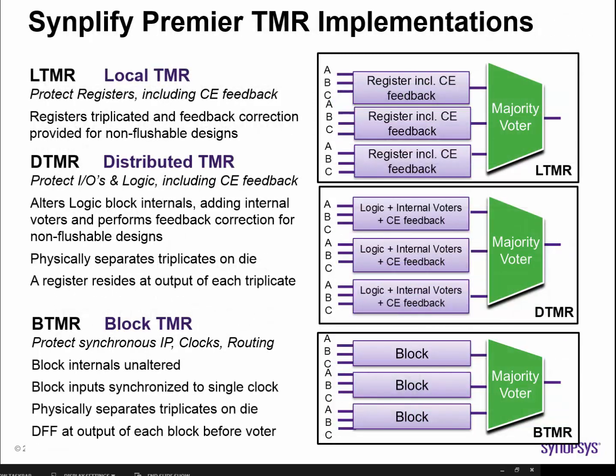Simplify offers a variety of different TMR implementations to protect different primitives and macros in the FPGA design. First, it offers a so-called local TMR to protect any register. The register is protected by triplicating it and then feeding the outputs from the triplicates into a majority voter to determine the final error-corrected output. Secondly, there is distributed TMR or DTMR, which is used to protect the internals of entire logic blocks. A register resides at the output of each triplicated logic block, and the register outputs of the triplicates are each fed into a majority voter to determine the final error-corrected output.